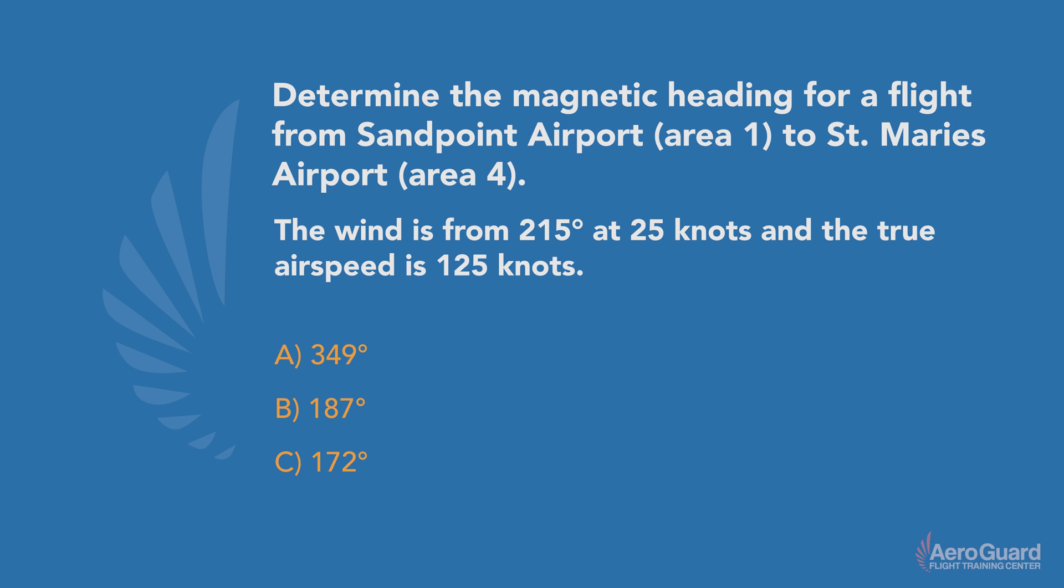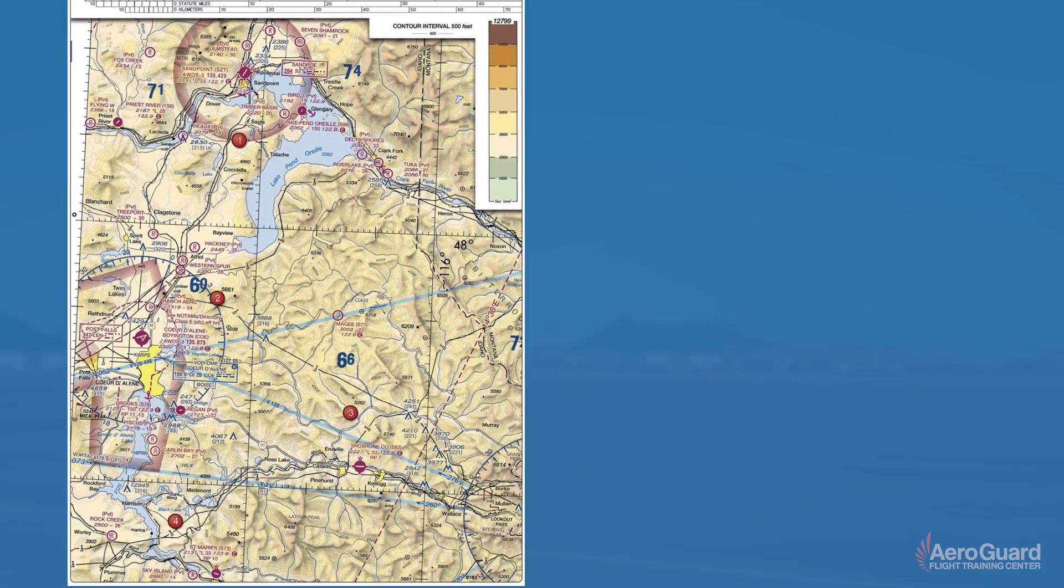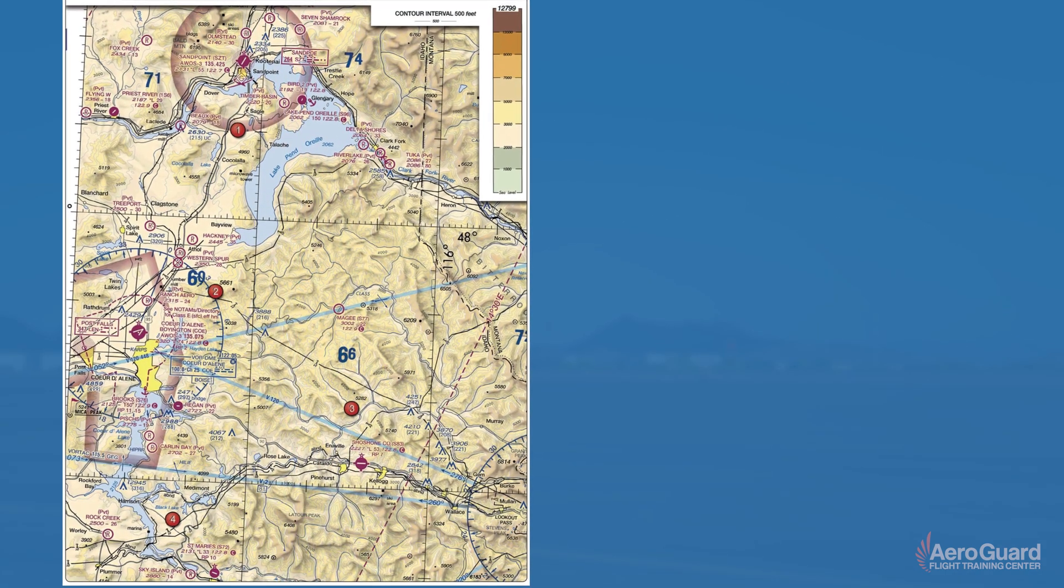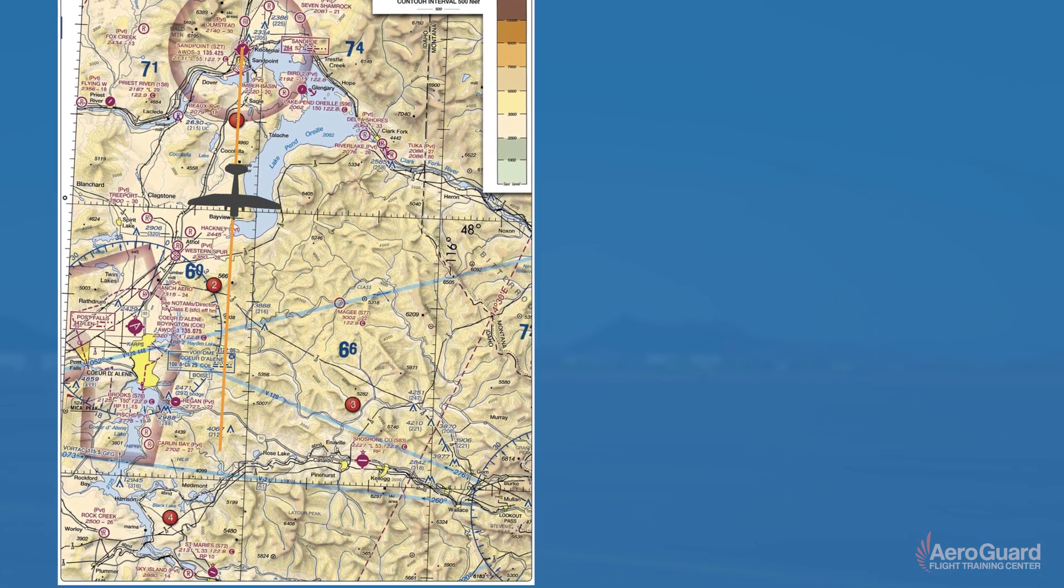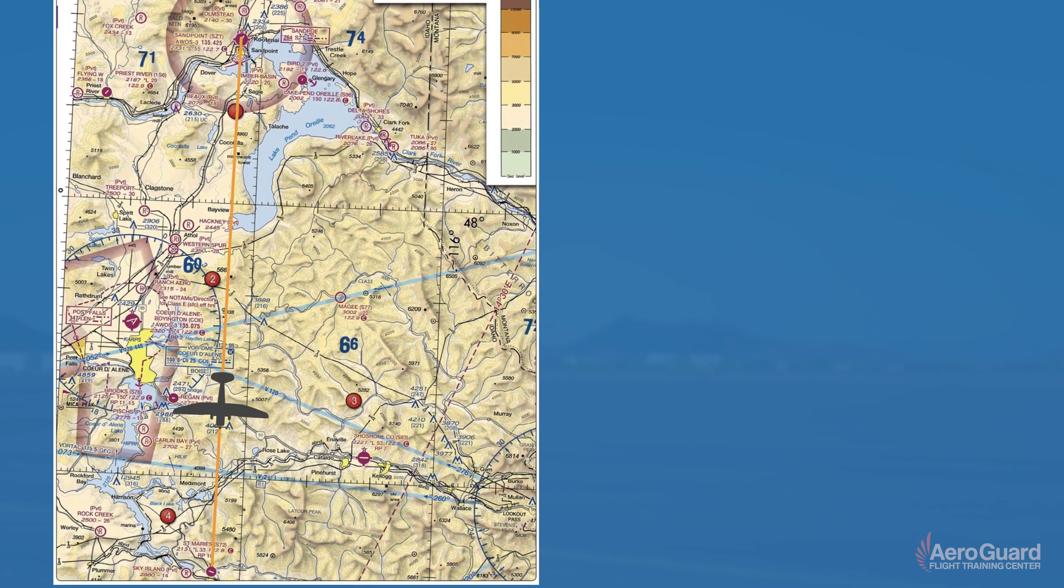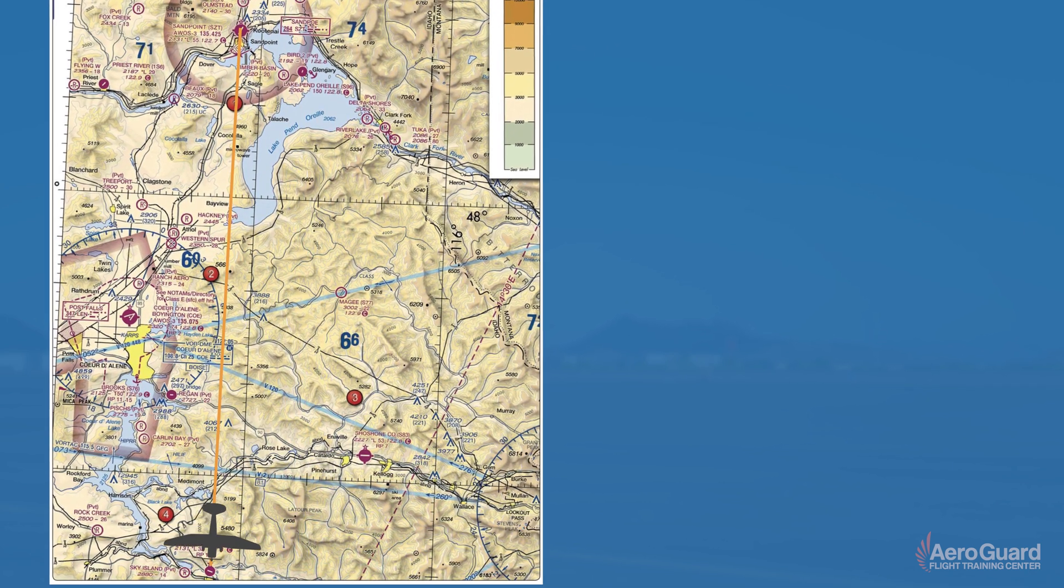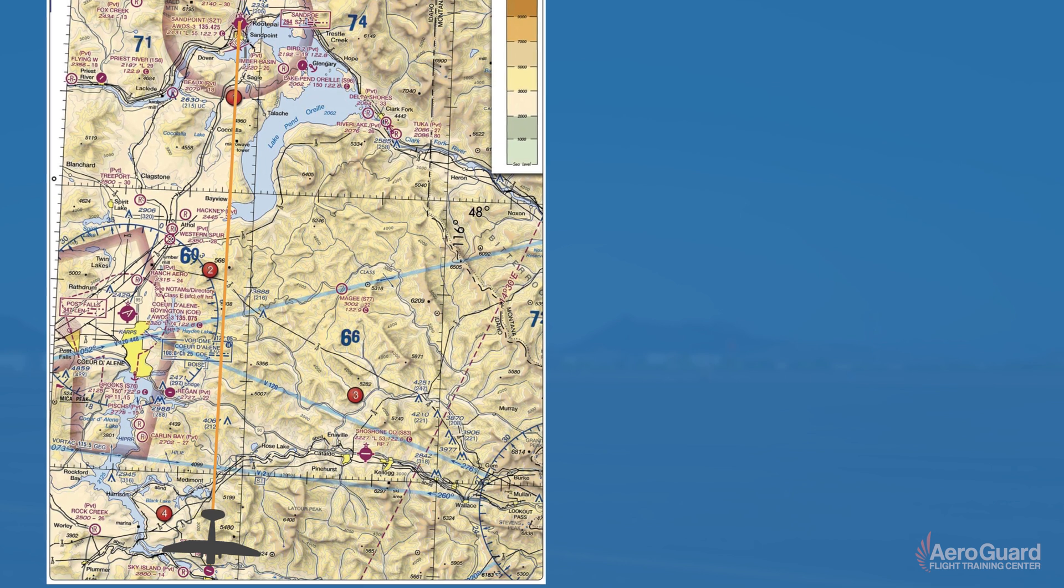Okay, so there's a lot to unpack here. We'll get started by bringing up the image from the question. First, let's draw our true course by connecting a line from Sandpoint Airport to St. Marie Airport, and I'll put a little arrow just so we are reminded about the direction.